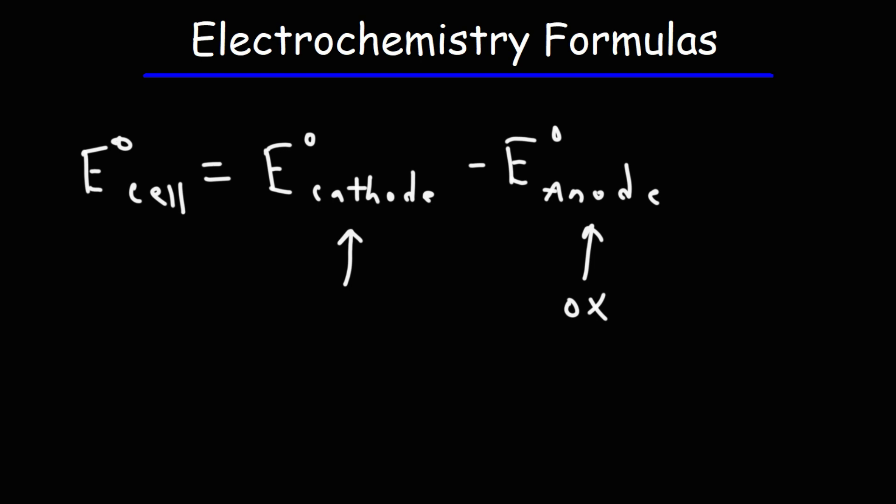It's also important to note that oxidation occurs with a loss of electrons, reduction occurs with a gain of electrons. Here's an example: copper 2 plus when it gains two electrons will turn into copper metal. Because the electrons are on the left side, this is a reduction reaction.